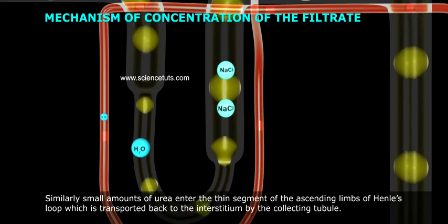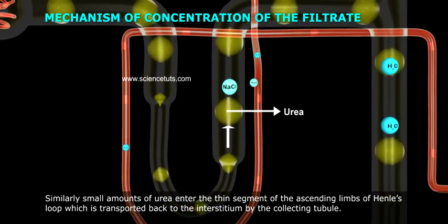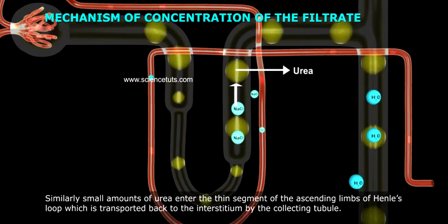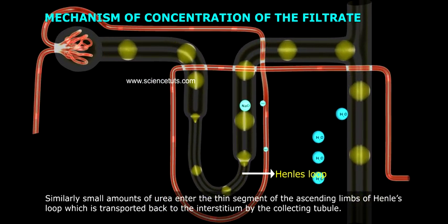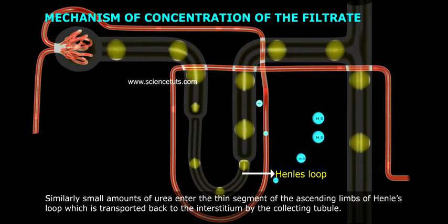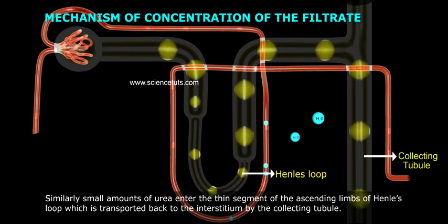Similarly, small amounts of urea enter the thin segment of the ascending limbs of Henle's loop, which is transported back to the interstitium by the collecting tubule.